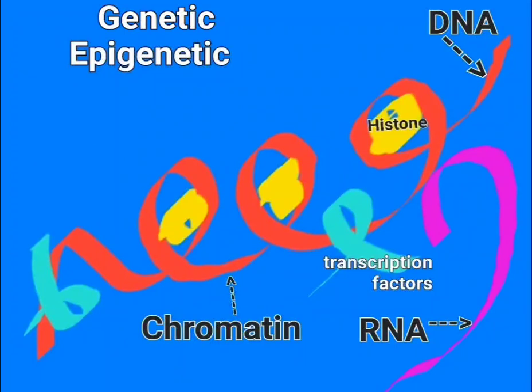Transcription factors can control transcription by either recruiting RNA polymerase to initiate mRNA synthesis, turning the gene on, or by blocking RNA polymerase function, turning the gene off. There are three types of transcription factors: general, specific, and regulatory transcription factors.